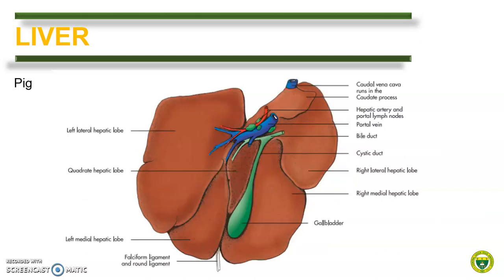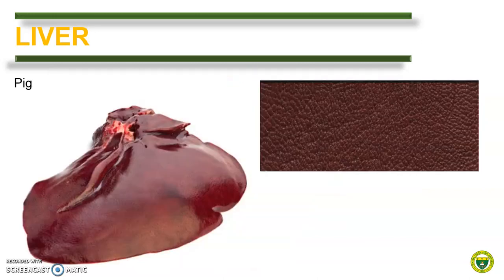The liver of the pig resembles that of the dog in terms of lobation. However, the papillary process of the caudate lobe is missing, as shown here. Grossly, the parenchyma of the liver of the pig is described to have an appearance somewhat close to the morocco leather pattern. An image of the morocco leather and the actual pig liver is provided for comparison.